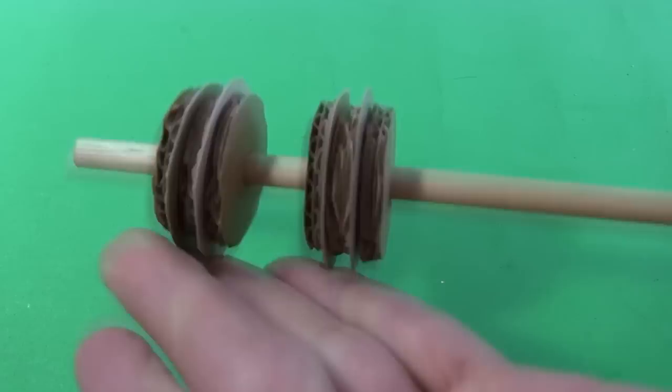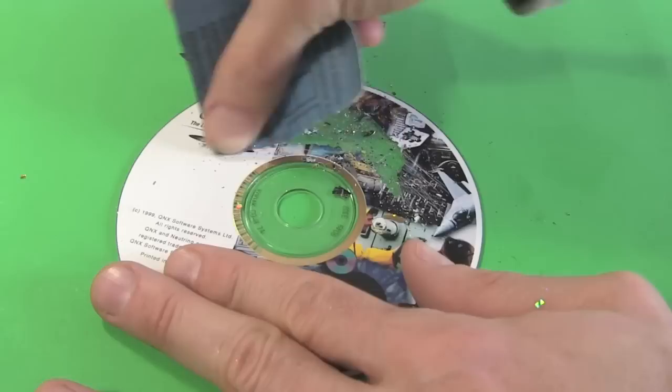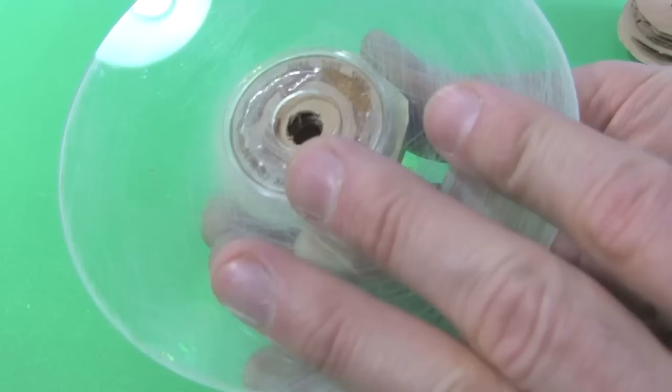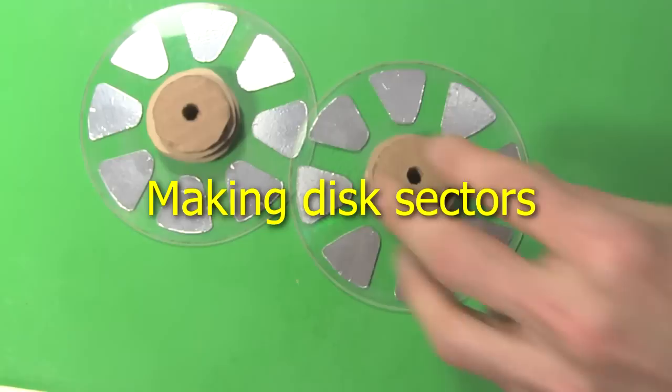Make sure they turn very freely on the shaft, but not so loosely that they wobble. Remove any painted label from your CDs. This is just in case it's electrically conductive. Here I'm using sandpaper, but do whatever works for you. Glue each pulley to a CD. CDs have a little ridge on one side. I'm gluing to that side. And here are the two finished discs with their pulleys.